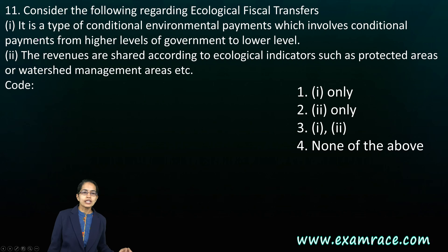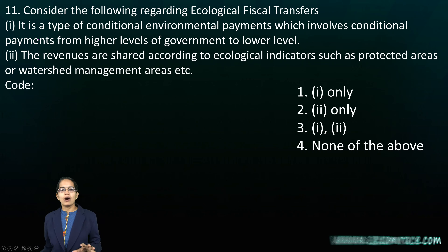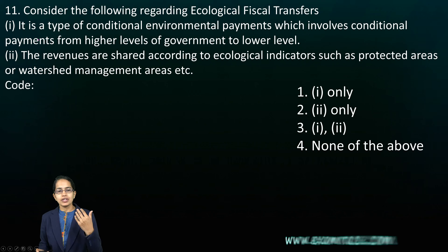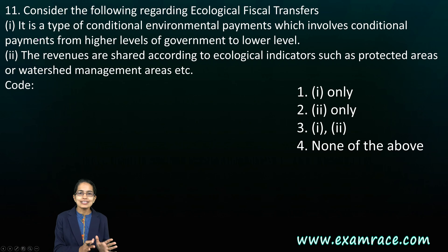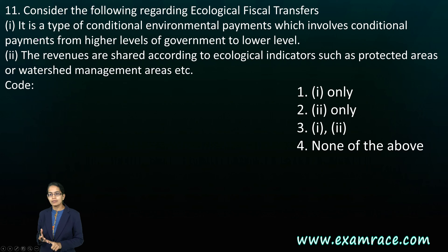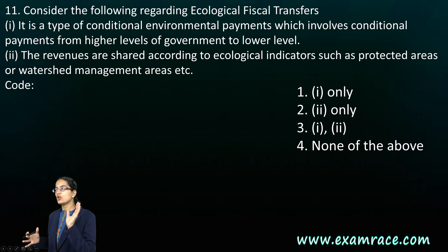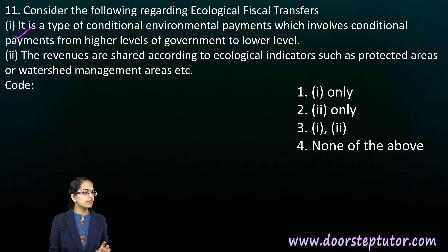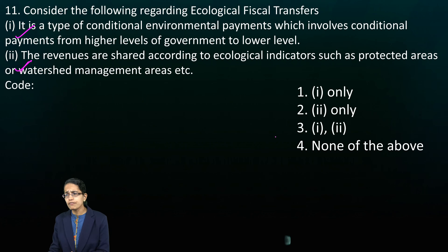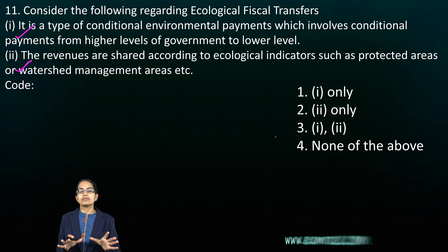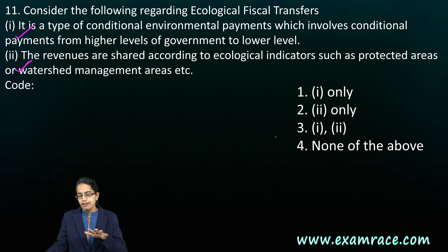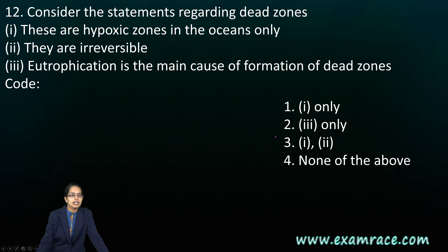The next question talks about Ecological Fiscal Transfers. When we talk about environmental payments which have a conditional payment system from higher-order government levels to lower-order government levels, we call it Ecological Fiscal Transfer systems. Revenue collected is related to indicators focused on protection of the area, watershed management, bills for environmental services, lowering the deforestation rate, sustainable management of forest carbon stocks. Both statements are correct here.